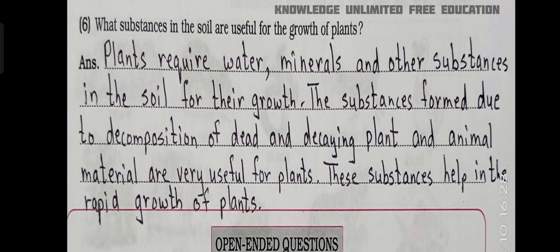Question number 6: What substances in the soil are useful for the growth of plants? Answer: Plants require water, minerals and other substances in the soil for their growth. The substances formed due to decomposition of dead and decaying plant and animal material are very useful for plants. These substances help in the rapid growth of plants.